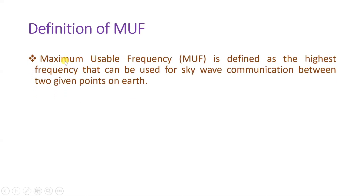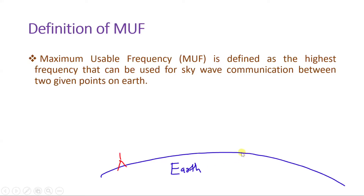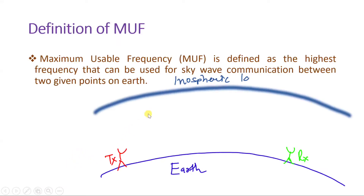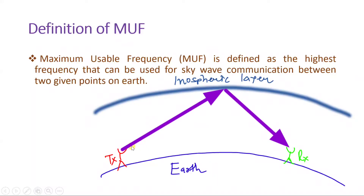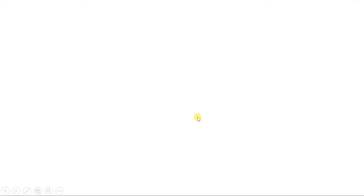Maximum usable frequency is defined as the highest frequency that can be used for sky wave communication between two given points on Earth. When we have two points — one is transmitter and one is receiver — in sky wave propagation, we send a signal into the sky and from the ionospheric layer the signal gets reflected back to the receiver. We keep increasing the frequency at the transmitter side and check whether the signal is received. The maximum frequency at which the receiver still receives the signal is the maximum usable frequency.